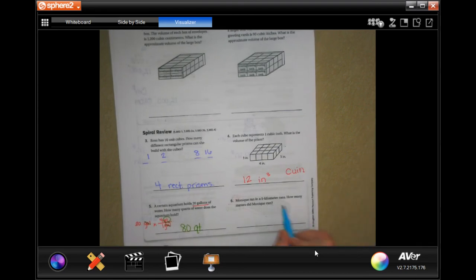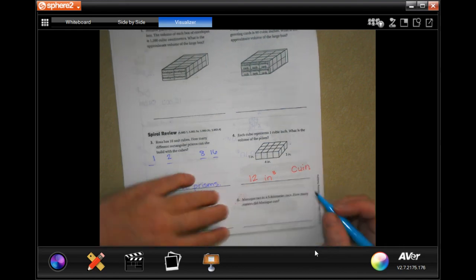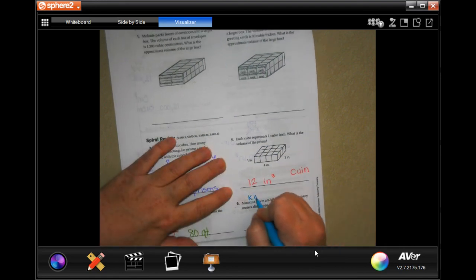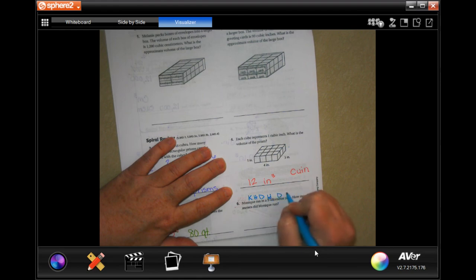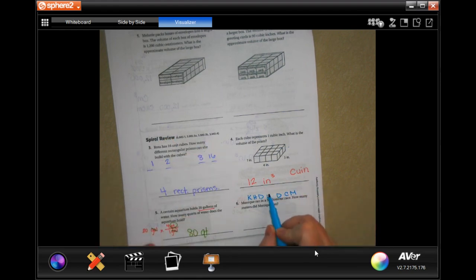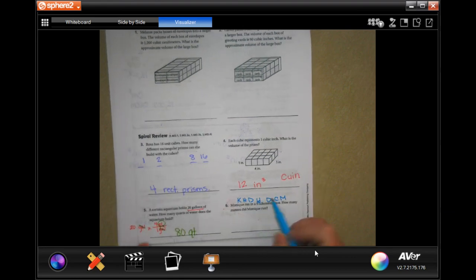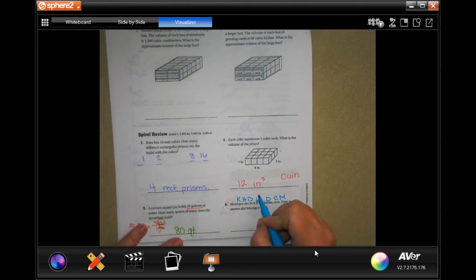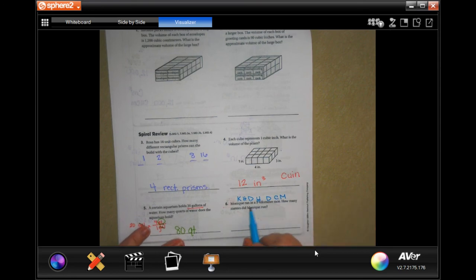Monique ran a 5 kilometer race. How many meters did she run? So right here, I'm going to write King Henry doesn't usually drink chocolate milk. Remember that this is our meters, liters, and grams.